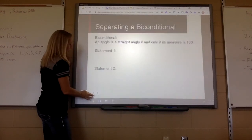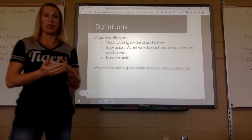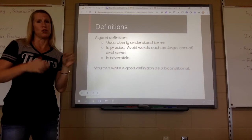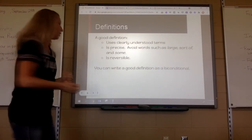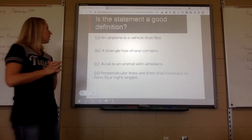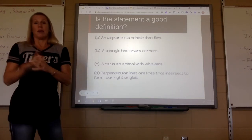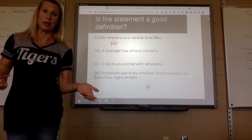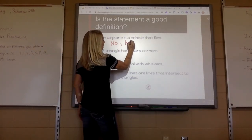A good definition uses clearly understood terms, it is precise — it doesn't use words like 'large' or 'sort of' — and it's reversible, meaning you can write it as a true biconditional. Let's determine whether these are good definitions. 'An airplane is a vehicle that flies' — that would not be a good definition. A counterexample: a helicopter is also a vehicle that flies.